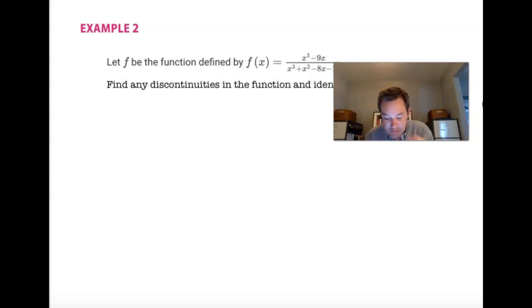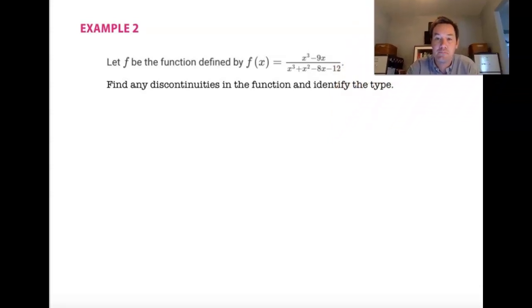So, for this one, let f be the function defined by f of x equals x cubed minus 9x over x cubed plus x squared minus 8x minus 12. Find any discontinuities in the function and identify the type. So this particular problem, I can tell we might have some discontinuities because it's a rational function. So, rational functions often have issues with their domain. It's not just the standard all-real numbers because you may end up dividing by zero. That can oftentimes create a vertical asymptote or sometimes just a hole.